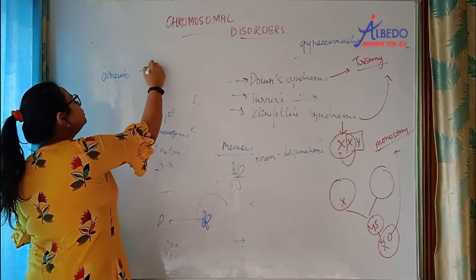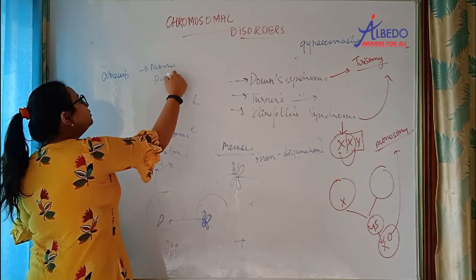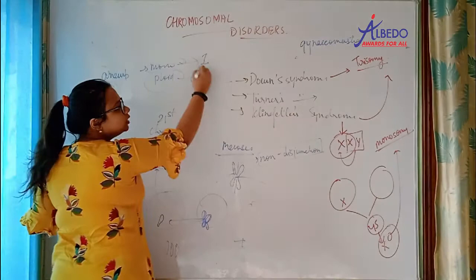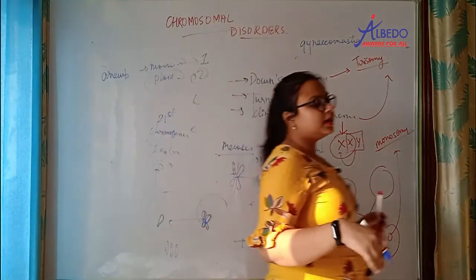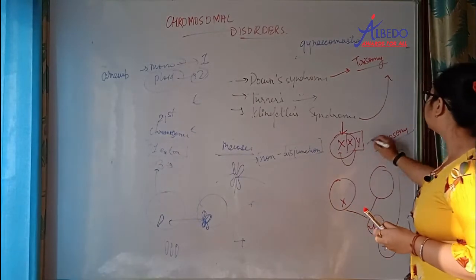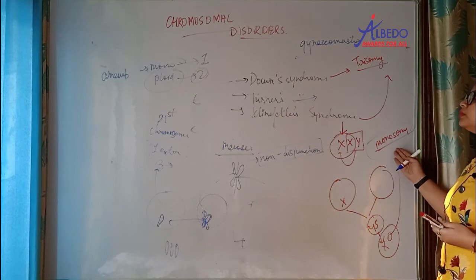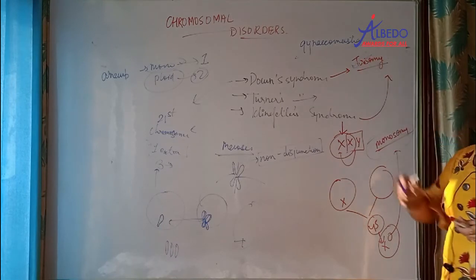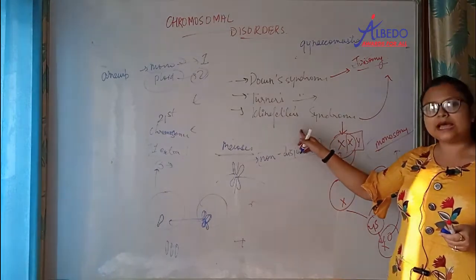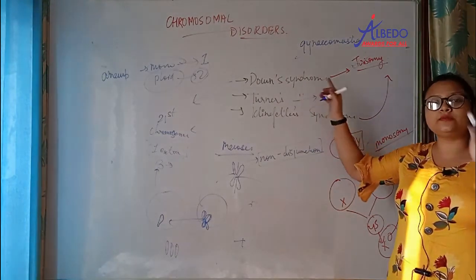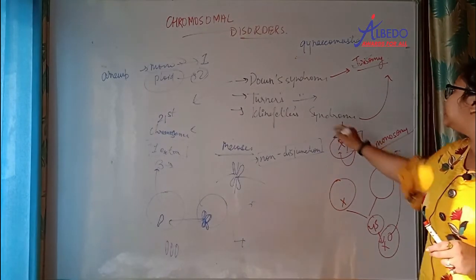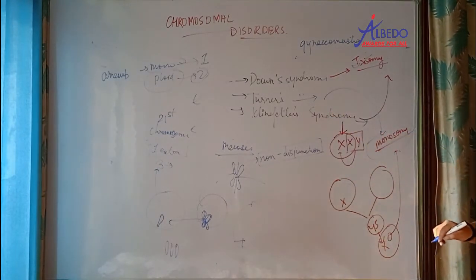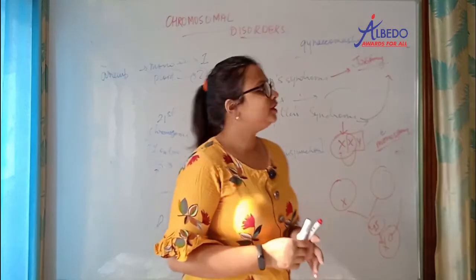In aneuploidy, you have two conditions: monosomy and trisomy. Trisomy examples are Down syndrome and Klinefelter syndrome. In Down syndrome, who is trisomic? The 21st chromosome. In Klinefelter syndrome, who is trisomic? The sex chromosome — XXY. And Turner syndrome is an example of monosomy — females have only one X chromosome. So here we complete your chapter on inheritance.